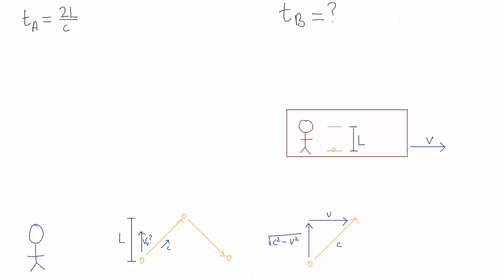So then the total distance the photon travels in the up and down direction is 2L. And its velocity in the vertical direction is root c squared minus v squared. So now we have an expression for TB. Can you write this in terms of TA?